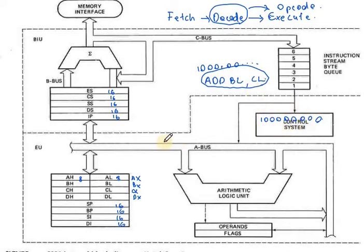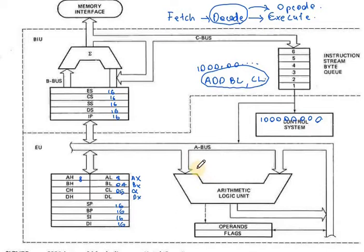Suppose we have a BL value — an 8-bit value in hexadecimal, say 04. CL also has a value, say 05. The control system releases signals: BL releases its value 04, CL releases its value 05, and they are added in the ALU — 04 plus 05. The result is then stored back to BL. This is how the connection works through address bus and data bus.